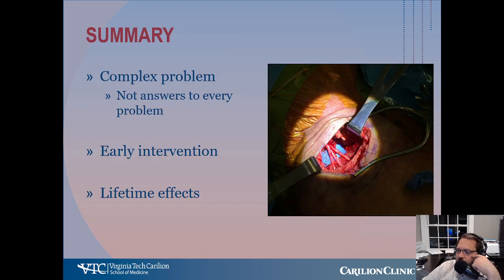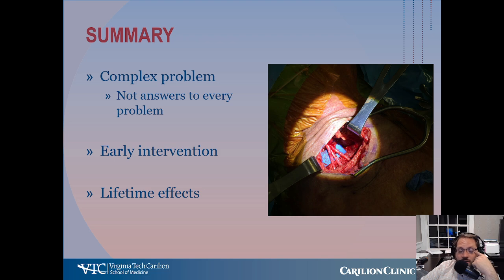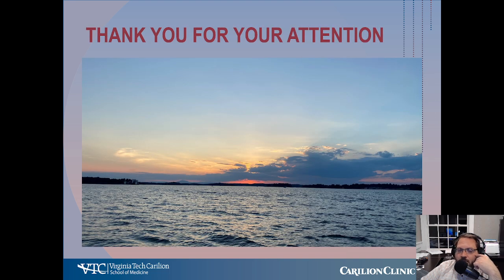In summary, obstetrical brachial plexus palsy is a complex problem — there are not answers or solutions for every problem. Certainly early intervention can give you better results: early intervention for neurological surgery, early intervention for shoulder internal rotation contractures can all lead to better results. But even with the best treatment, these kids usually have lifetime effects. They're not normal — they can be good, they can do a lot of things and have great high quality lives, but they're not normal. The goal of treating these kids and their families is to set expectations and do what we can to make them better. Thanks everybody for your attention. I look forward to going over some cases on Monday.